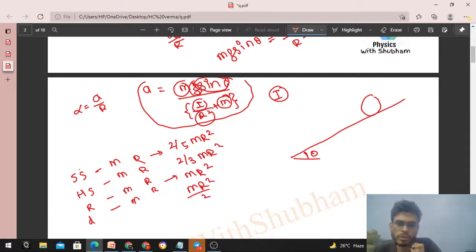Now, I is inversely proportional to acceleration. If I is more, acceleration is less. We need maximum acceleration for minimum time. It means minimum I.